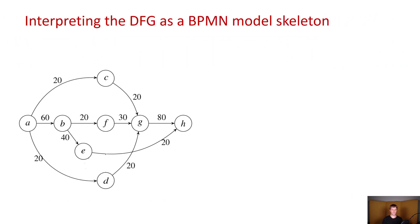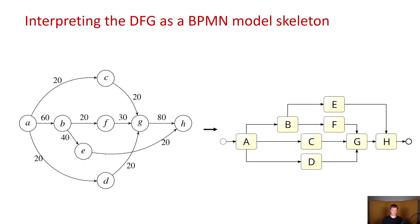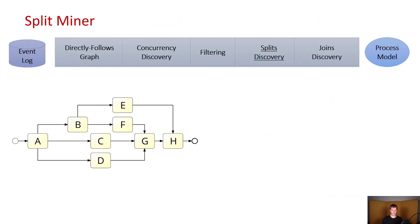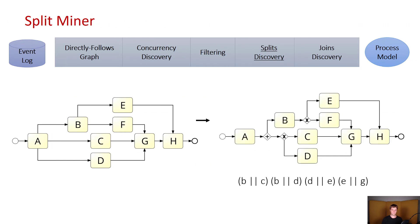However, it is important to note that this directly follows graph can already be used as the basis for a BPMN model, and we can simply transform it. Of course this is not a valid BPMN model yet, because there are gateways missing. So in order to fix that, we have to first discover the splits, and this is where the concurrent pairs of activities that we saved previously are going to be used.